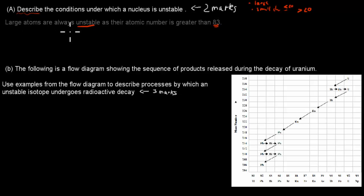Now, this says describe, so you don't have to explain, you don't have to give much detail. All you have to do is describe that it's unstable and when it's unstable. You don't have to explain why that is the case. That's for large atoms, they're always unstable if they have the atomic number greater than 83.